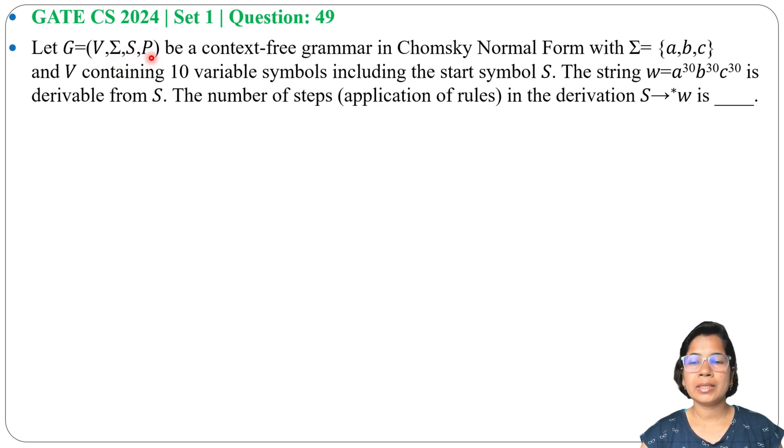G is a context-free grammar in Chomsky Normal Form with Σ = {a, b, c}, so it has three alphabets: a, b, c. V contains 10 variable symbols including the start symbol S.